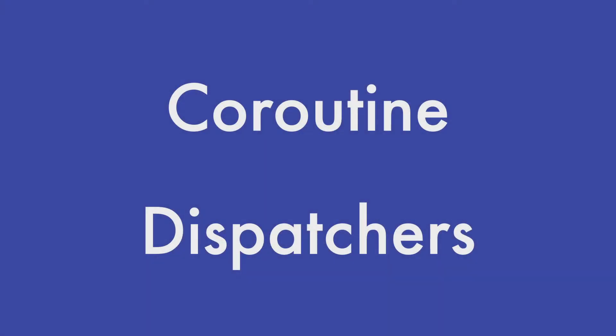Coroutine dispatchers determine on which thread or thread pool a started coroutine should be used for its execution. In this lecture, we will have a look at the different predefined coroutine dispatcher implementations that exist. You will learn when you should use each of them and how we can create our own dispatcher implementations.